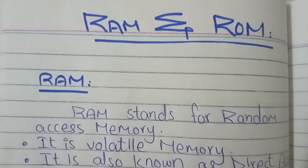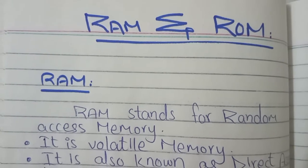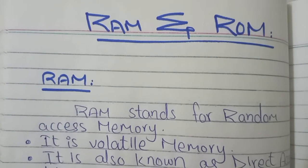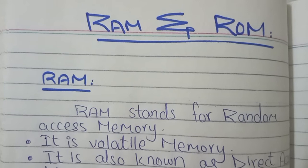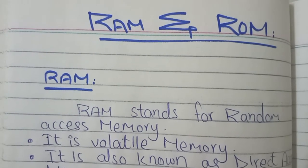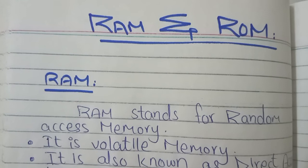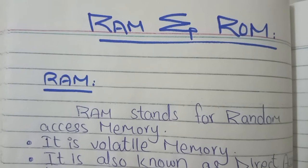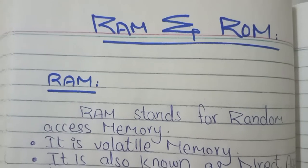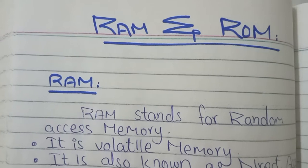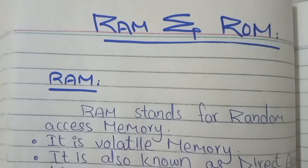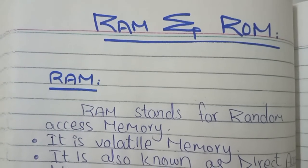RAM stands for Random Access Memory. It is a volatile memory. Volatile memory means that until you have a computer on or a function performing, data is stored. But as soon as you shut the computer down, all data will be lost.